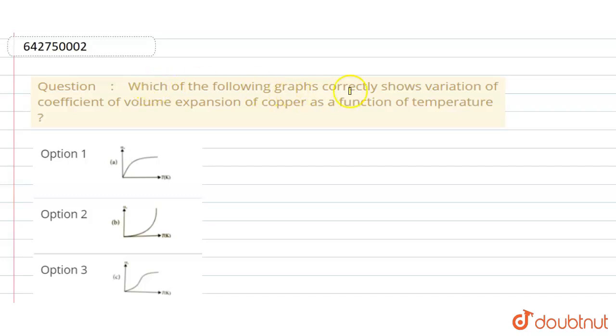Hello everyone, which of the following graphs correctly shows variation of coefficient of volume expansion of copper as a function of temperature?